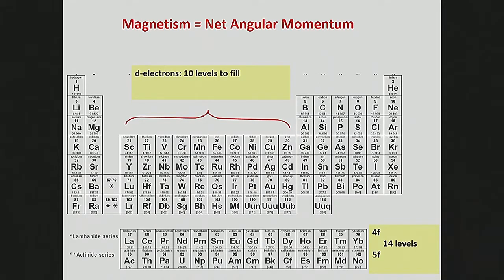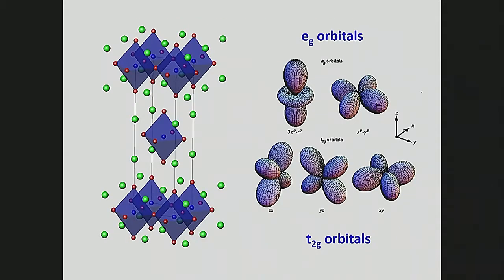We find magnetism in iron, cobalt, and nickel — the materials that make up ferromagnets — but also in many other materials. Basically you find magnetism when you have a partially filled d-shell or partially filled f-shell, either the 4f or 5f shell. If you combine these sorts of elements into solids, you have the possibility of a magnetic solid, because you have room for 10 d-electrons and 14 f-electrons, and if you don't have enough electrons to fill these shells there'll be some net angular momentum and a net magnetic moment.